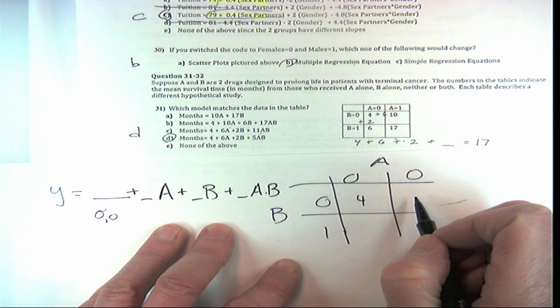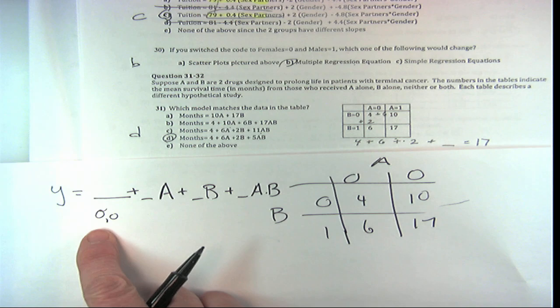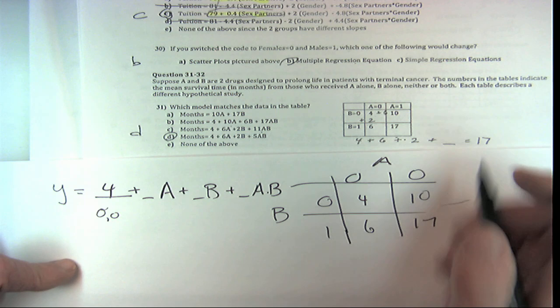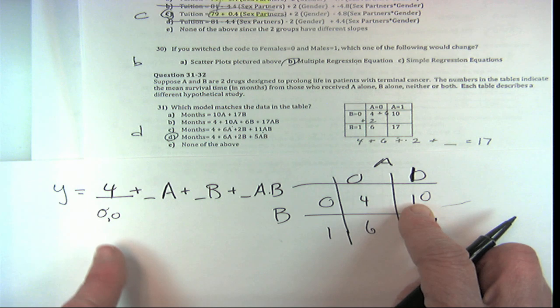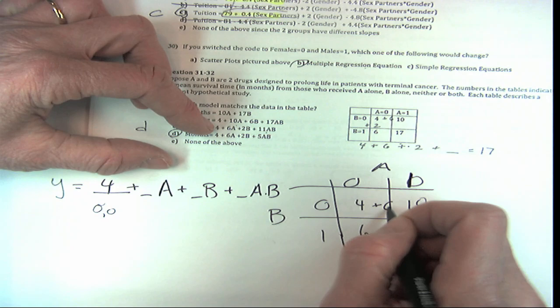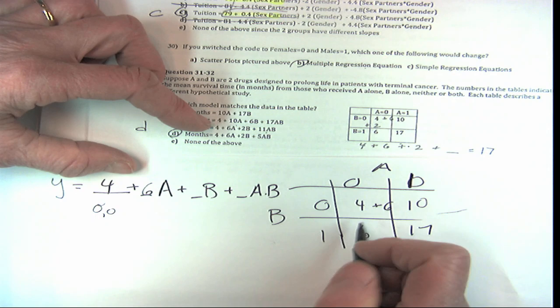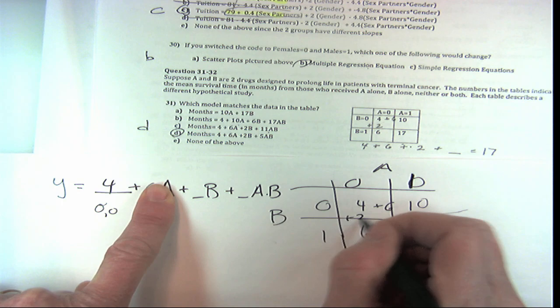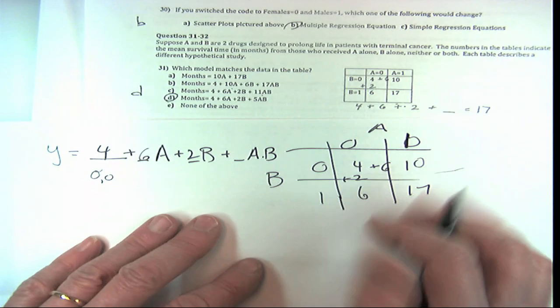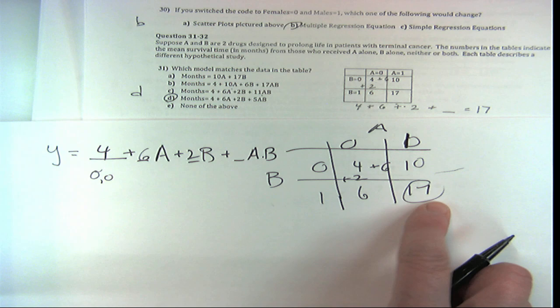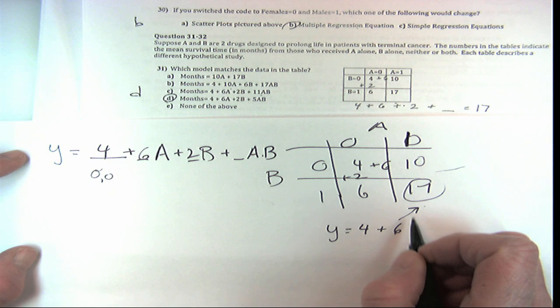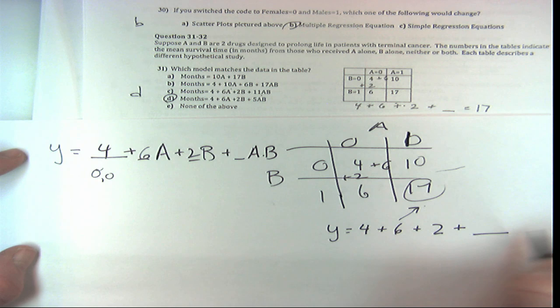When b is 0 and a is 1, the b and interaction terms drop out—you're adding 6 to get to 10, so that's plus 6. When b is 1 and a is 0, you're saying 4 plus what equals 6—that's plus 2. And when they're both 1, you have y equals 4 plus 6 plus 2 plus what more do I have to add to get 17? That's 5, and that's the interaction term. That's the model.